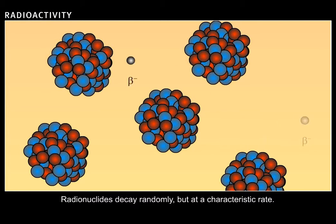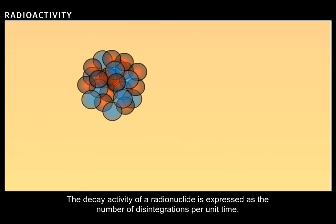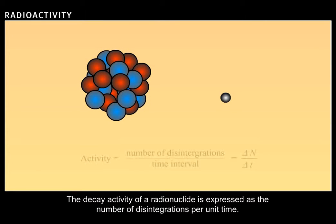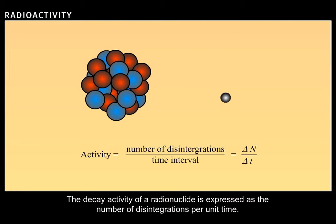Radionuclides decay randomly, but at a characteristic rate. The decay activity of a radionuclide is expressed as the number of disintegrations per unit time.